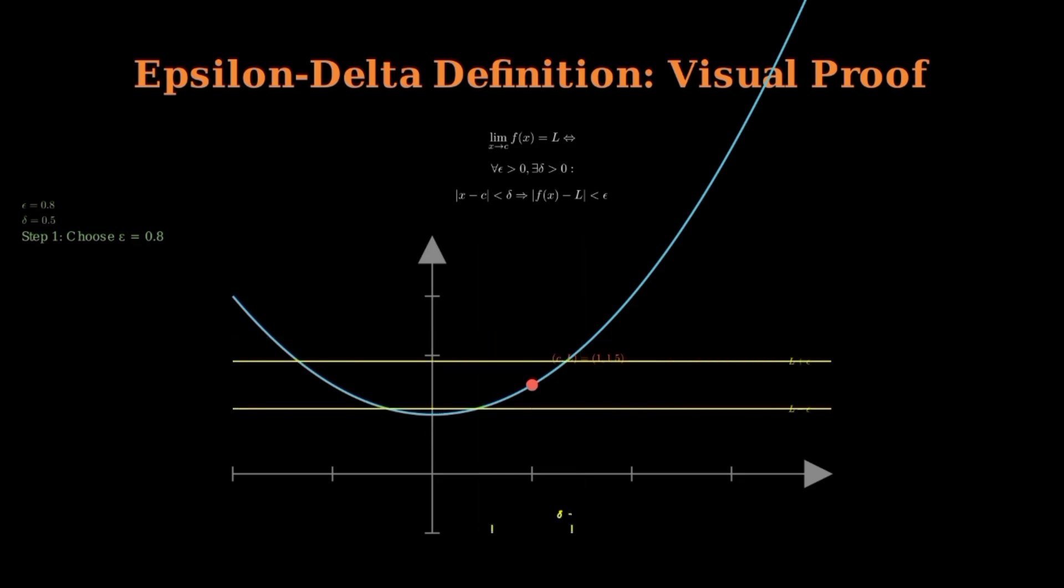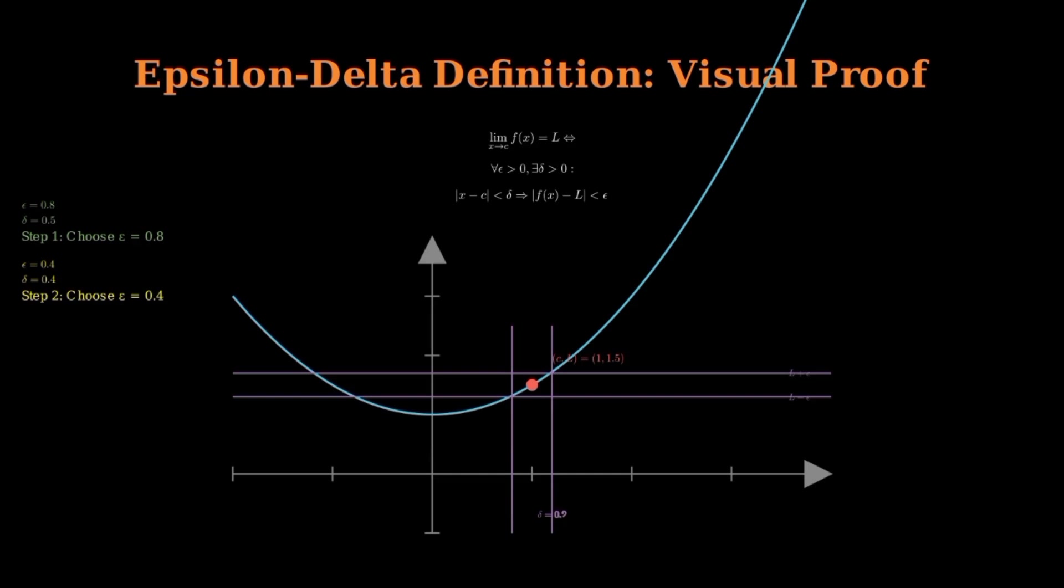Now we make epsilon smaller, at 0.4. We can still find a suitable delta, though it must be smaller. Finally, with epsilon equals 0.2, we find an even smaller delta that still works.